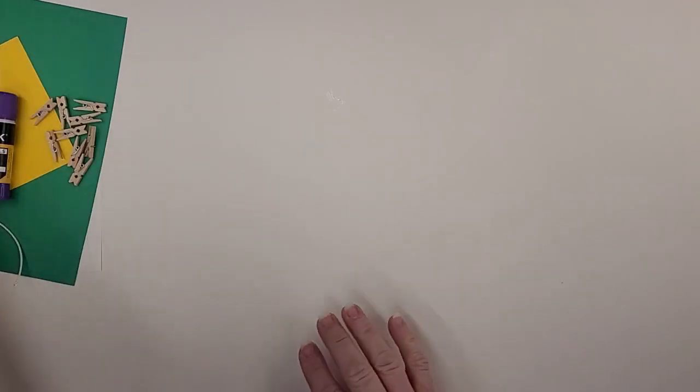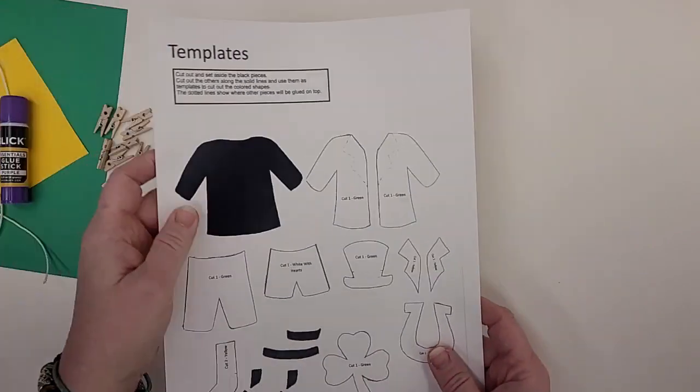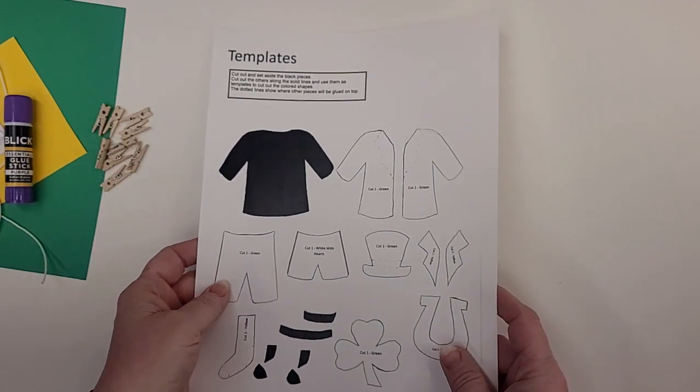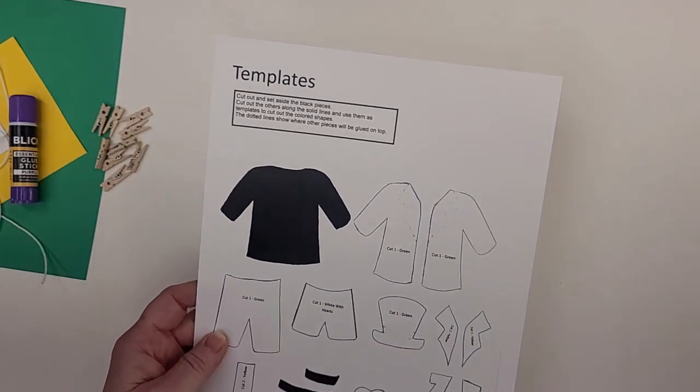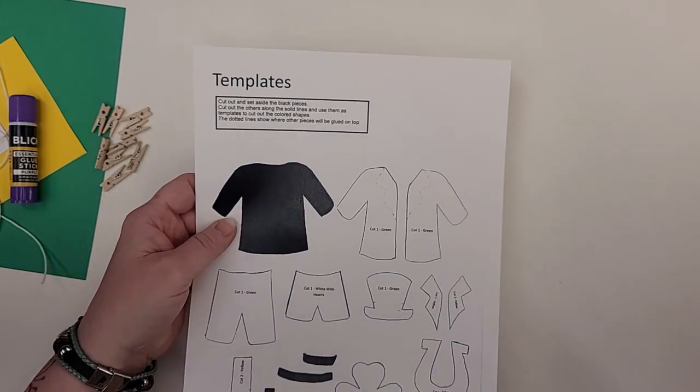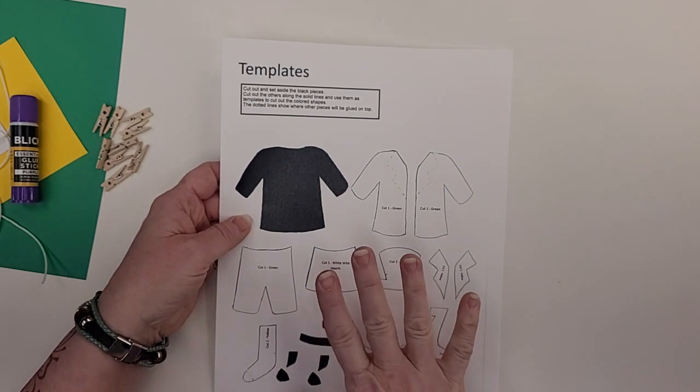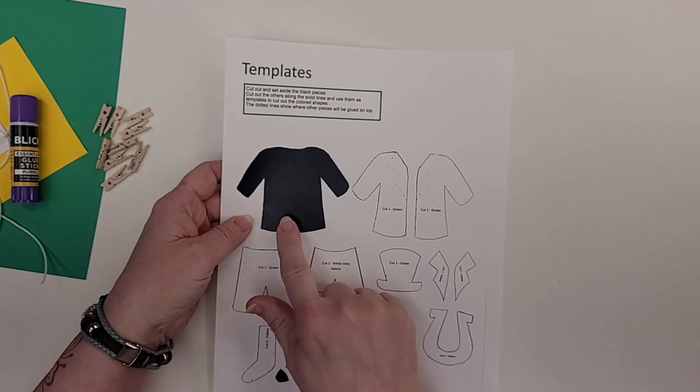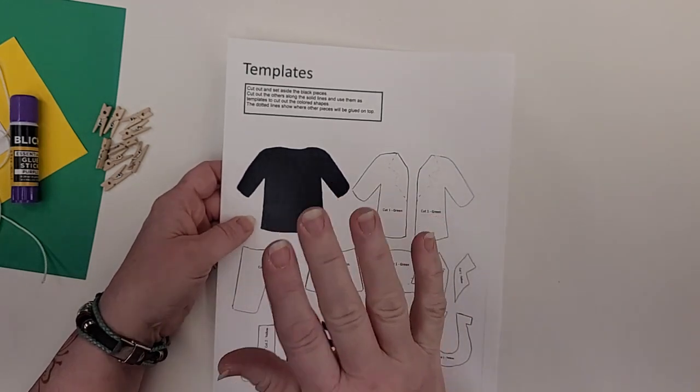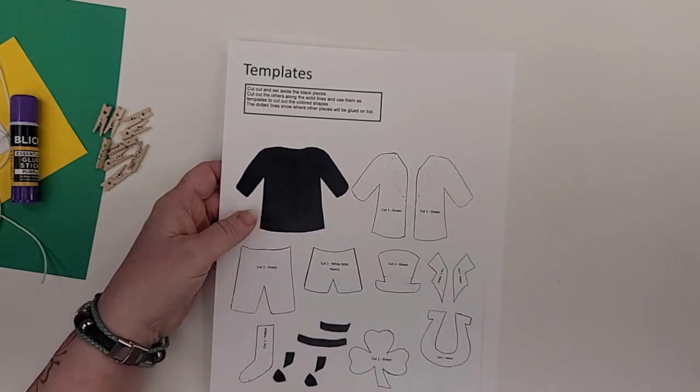All right so let's get started. I'm going to set everything to the side for right now and I'm going to start with the templates. Now what we're going to do is we're going to cut everything out. The black pieces we're going to use just as they are. So when you cut the black pieces out set them aside.